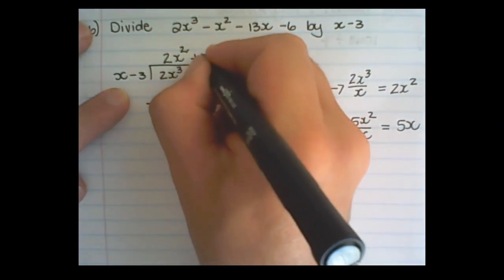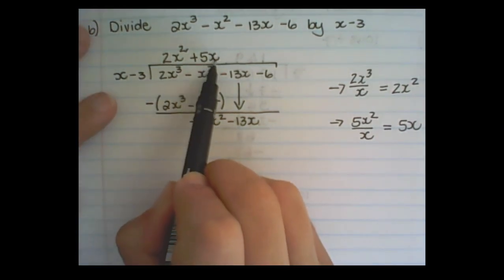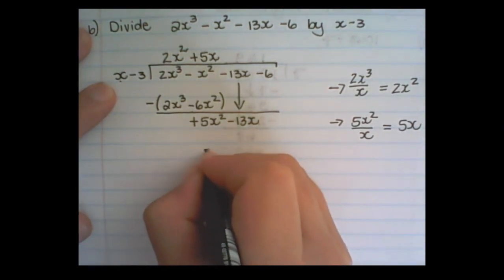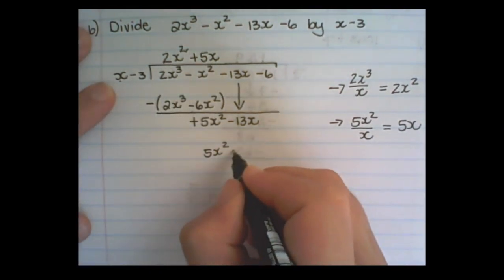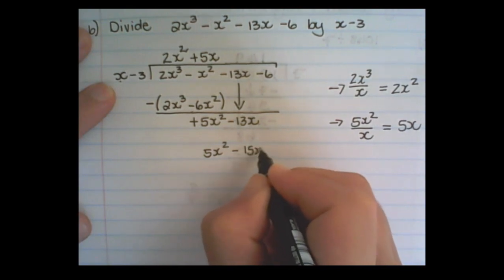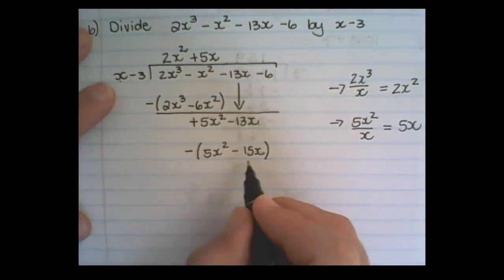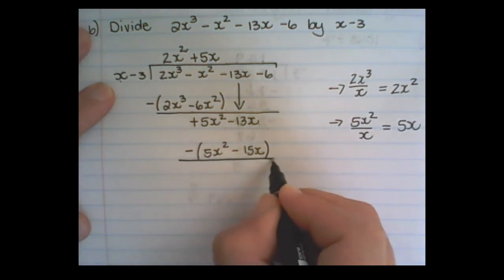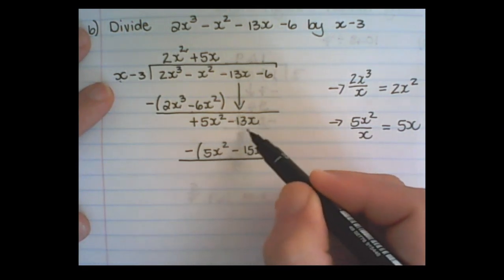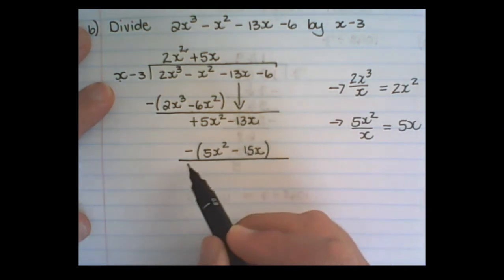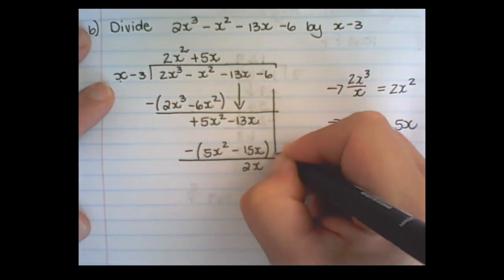Then I repeat what I did before. So 5x times x is 5x squared. 5x times negative 3 is negative 15x. But in order to move on, I subtract this. So 5x squared minus 5x squared is 0. And negative 13x plus 15x is 2x. And I bring the 6 down.